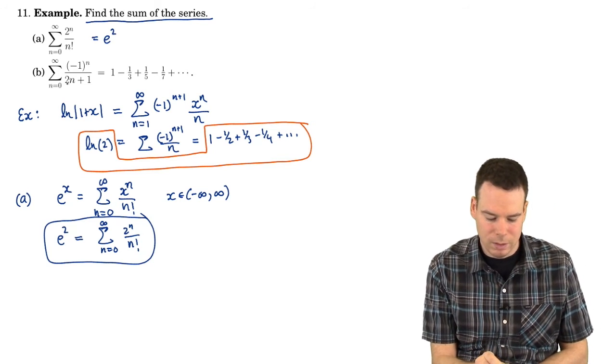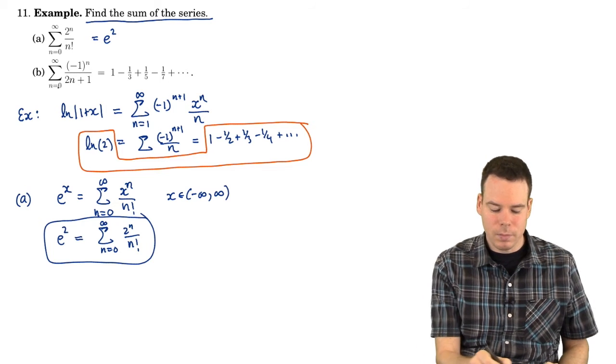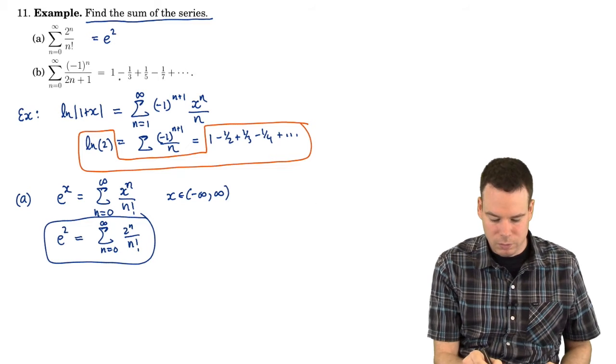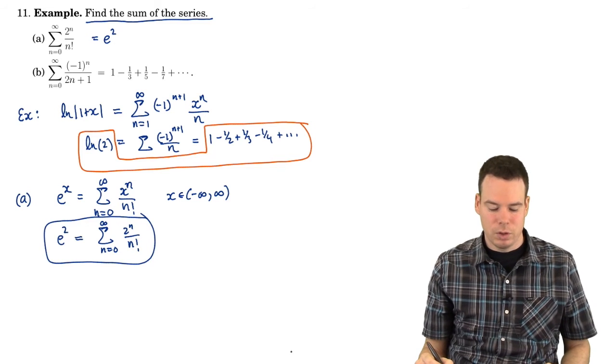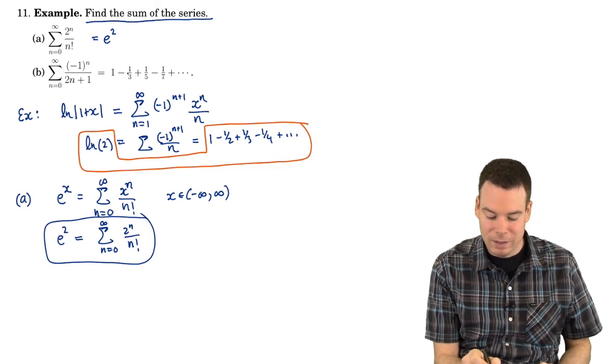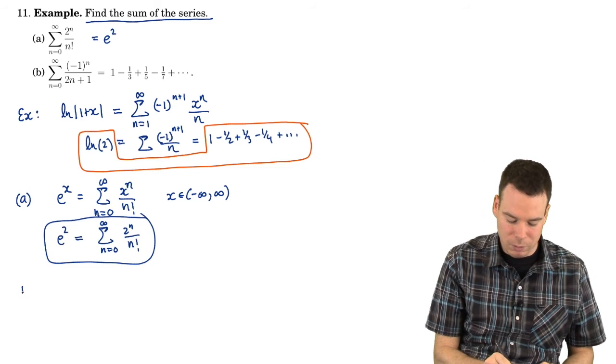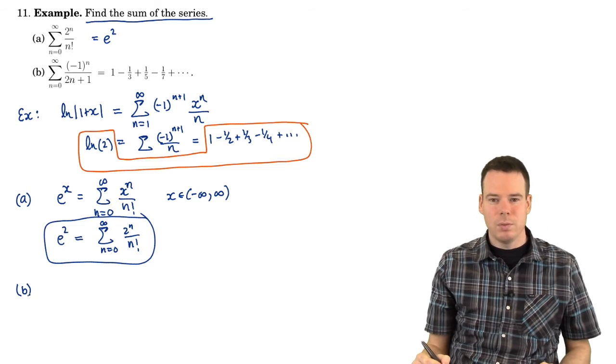How about this next one? Negative 1 to the n over 2 to the n plus 1. The sum of that goes from 0 to infinity. So there's the first few terms written out. What does that converge to? Again, the alternating series test would tell us it converged but it wouldn't tell us what it converged to. Now we need to figure out what it converges to. How do we do that?